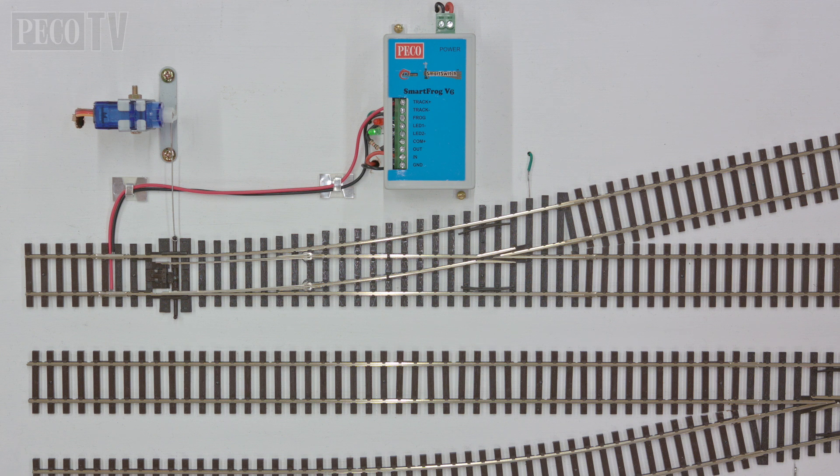When using smart switch, the smart frog is the simplest way to supply power to the frog. Smart frog is a circuit board that connects to the smart switch control board that powers the frog, automatically switching the polarity of the frog as the relevant servo moves the blades.